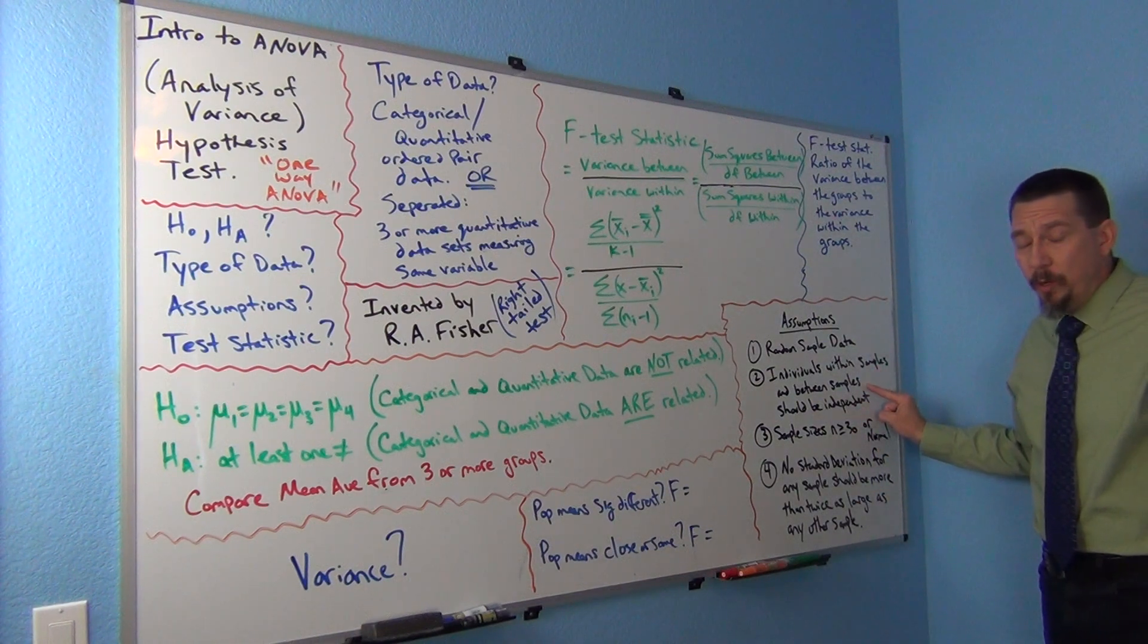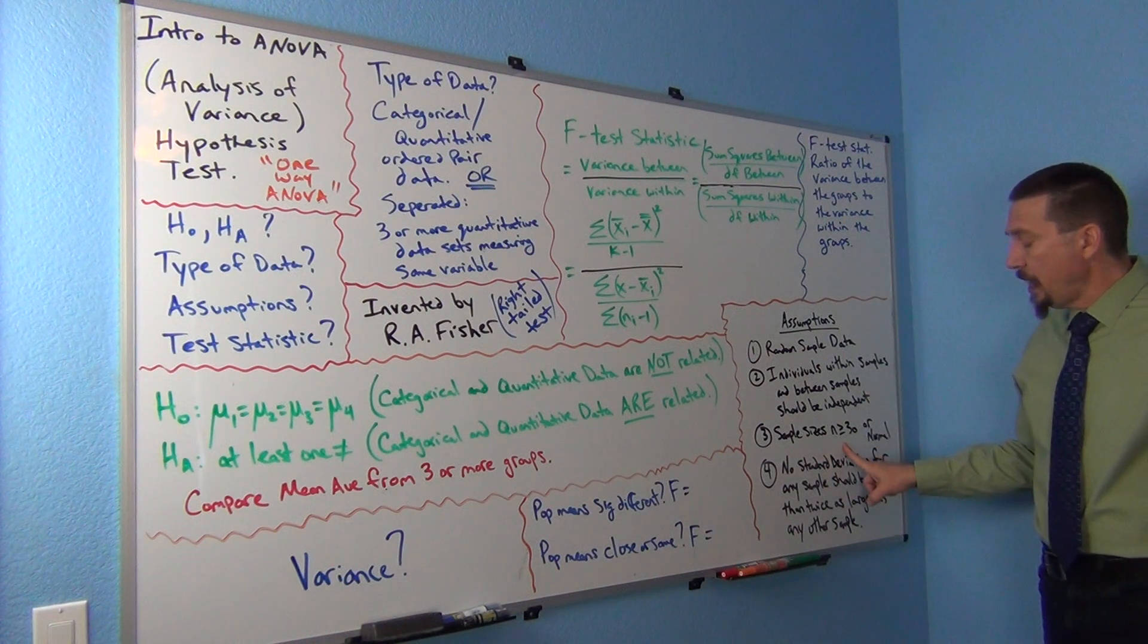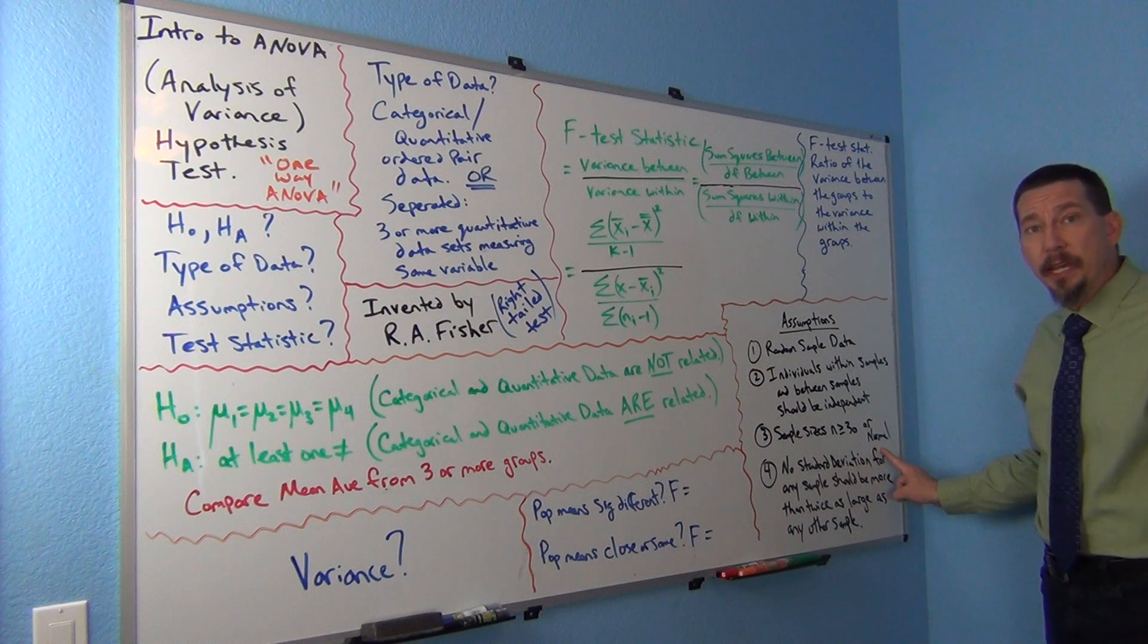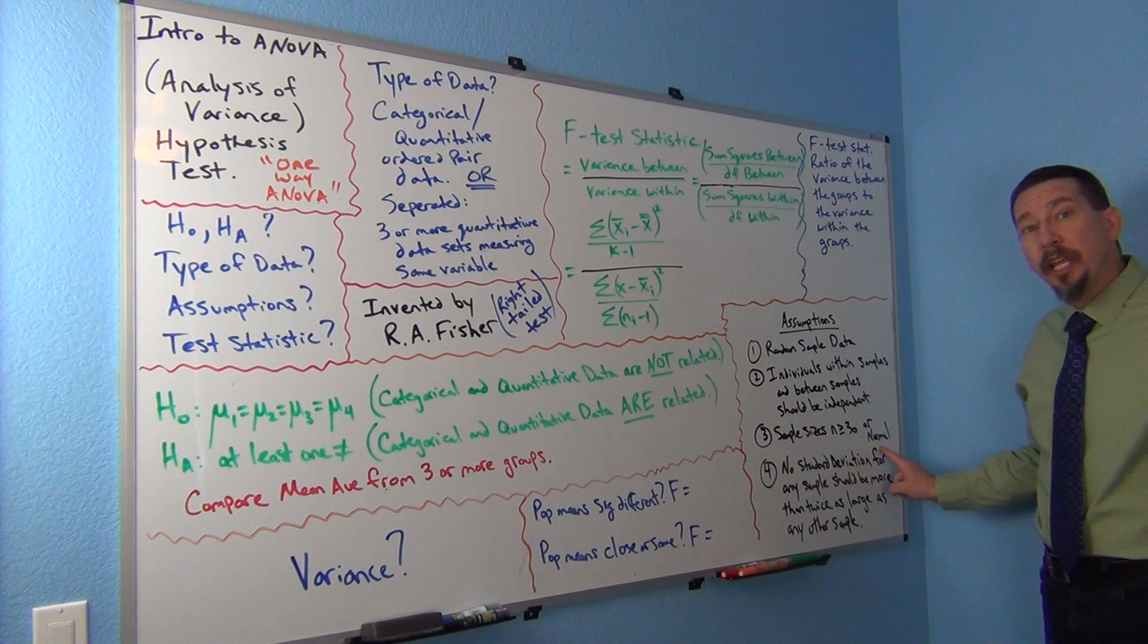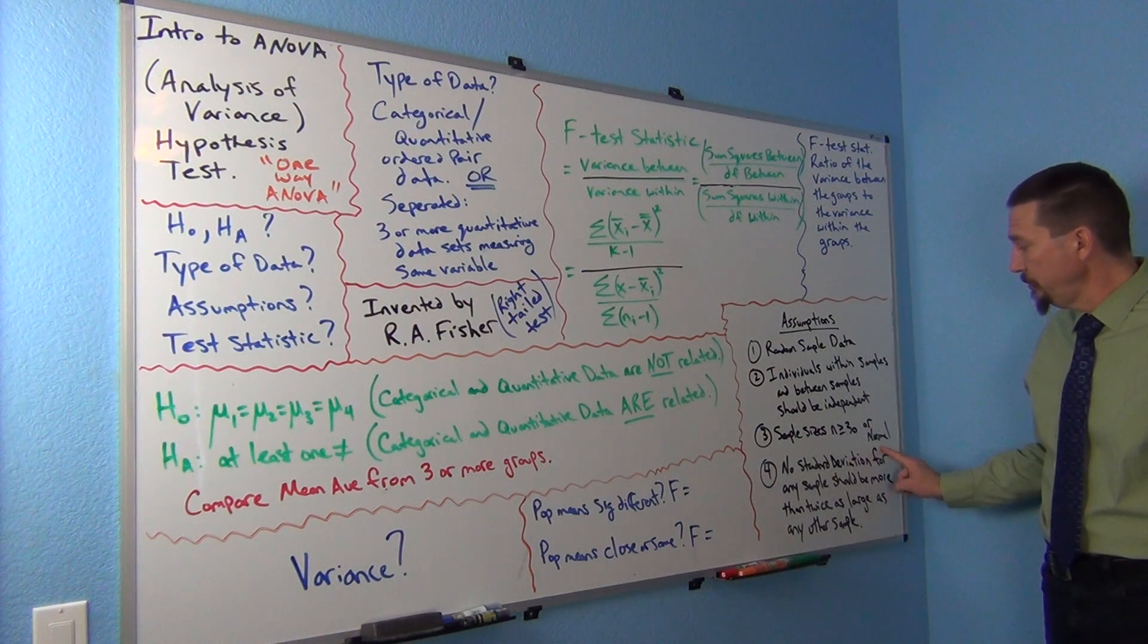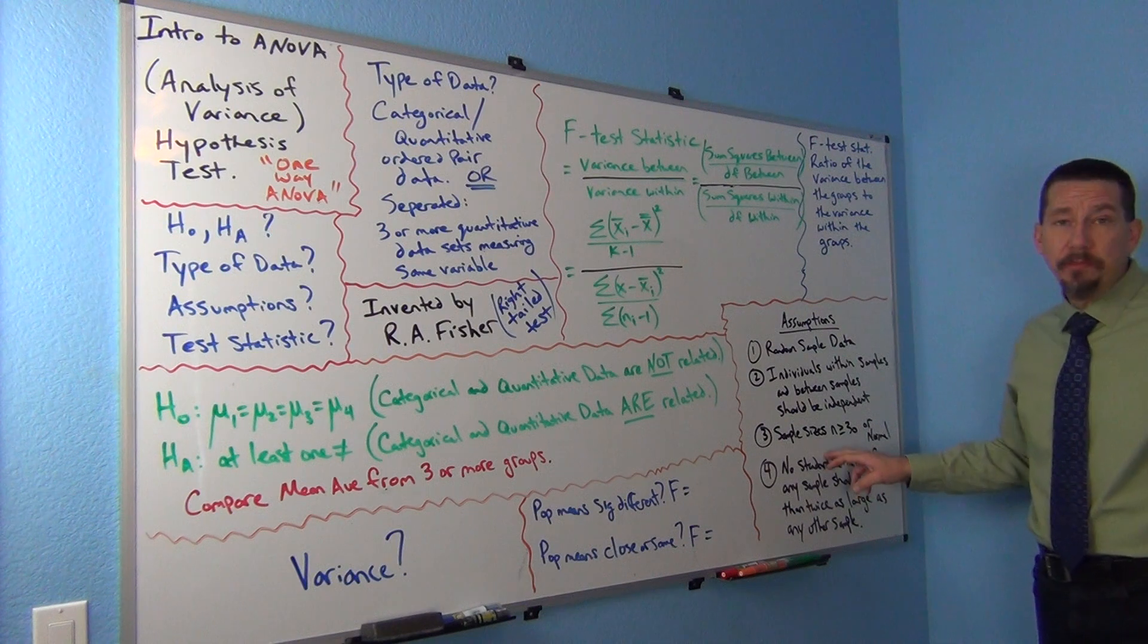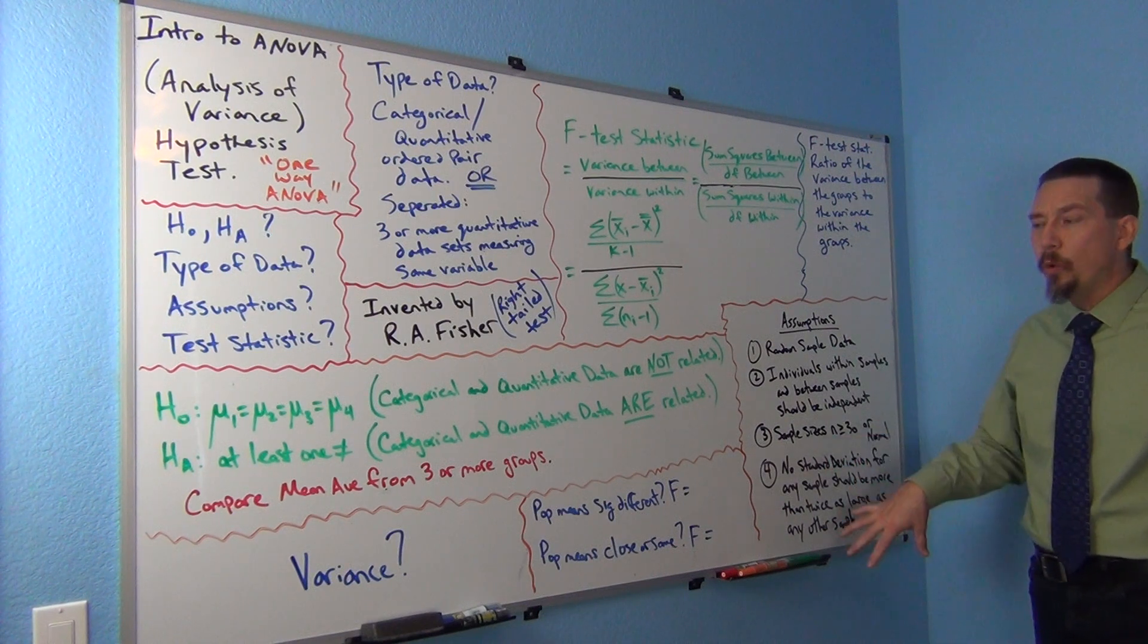So that's our second assumption. If you notice that looks very similar to what we did with two population mean. And then we got sample sizes at least 30 or normal. Sample sizes should be at least 30 or the sample should have a normal distribution or a bell shape. So that's the same assumptions as two population mean, really.